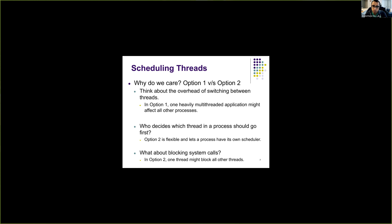However, option two can be problematic. If the operating system is unaware of multiple threads and a thread performs a blocking system call, all threads inside the process may get blocked. As far as the OS is concerned, it schedules the process as a whole — when one thread is blocked on a system call, all threads of that process are blocked because the kernel is unaware of the individual threads.